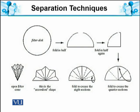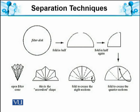This filter paper can be folded into a quarter, or we can use fluted filter paper, which increases the surface area so that our separation is better. If your analyte is insoluble, then we can use filtration.